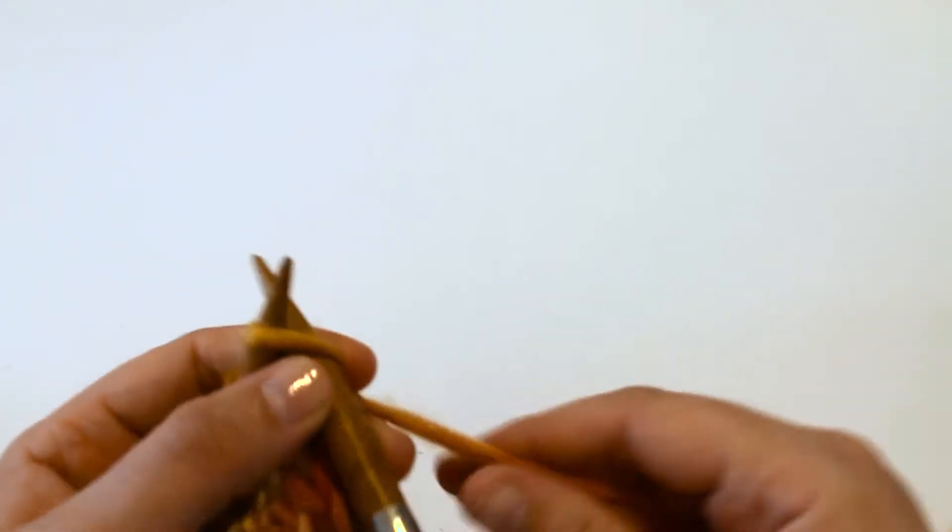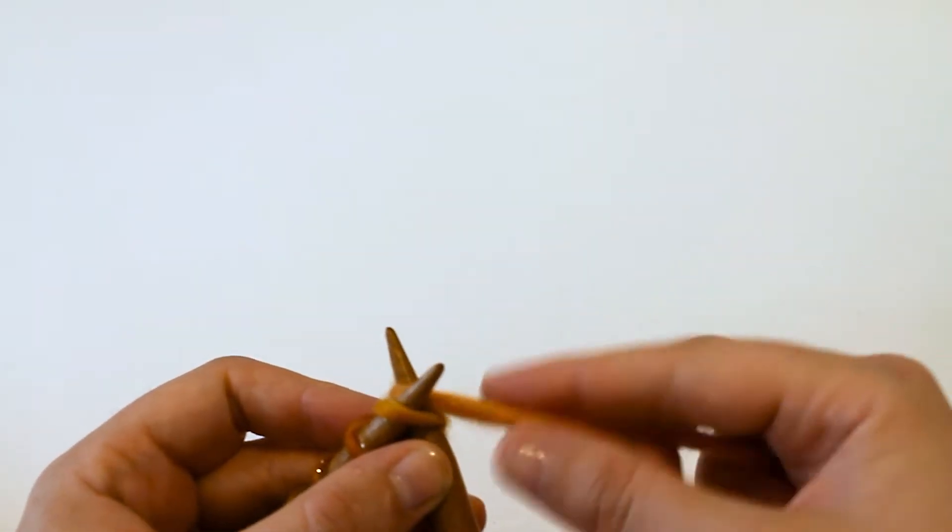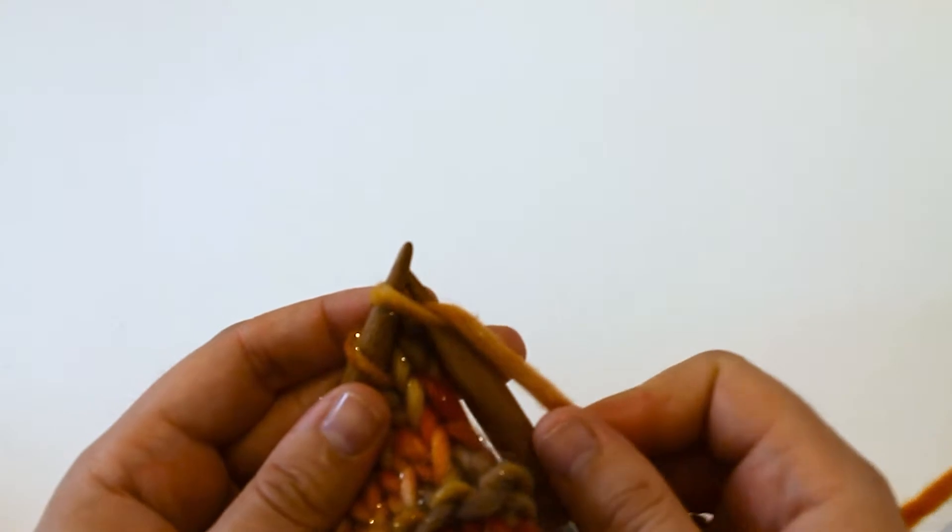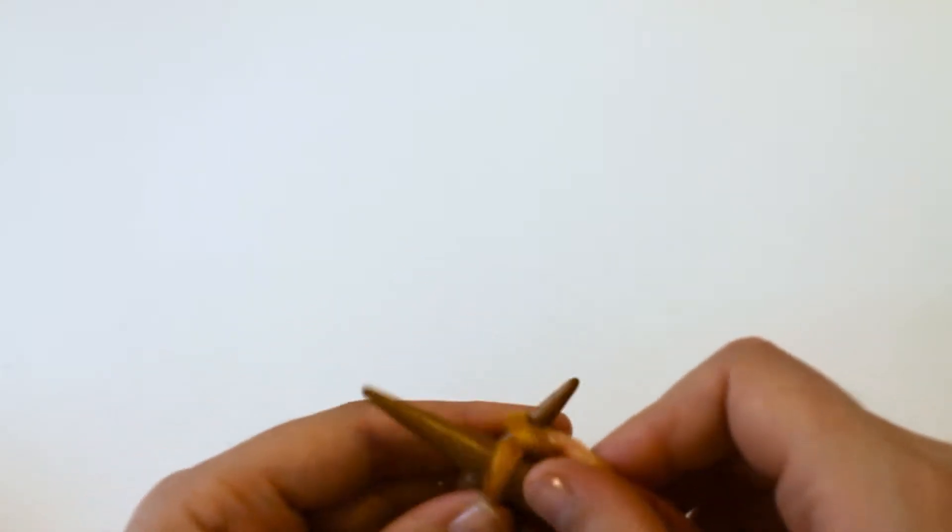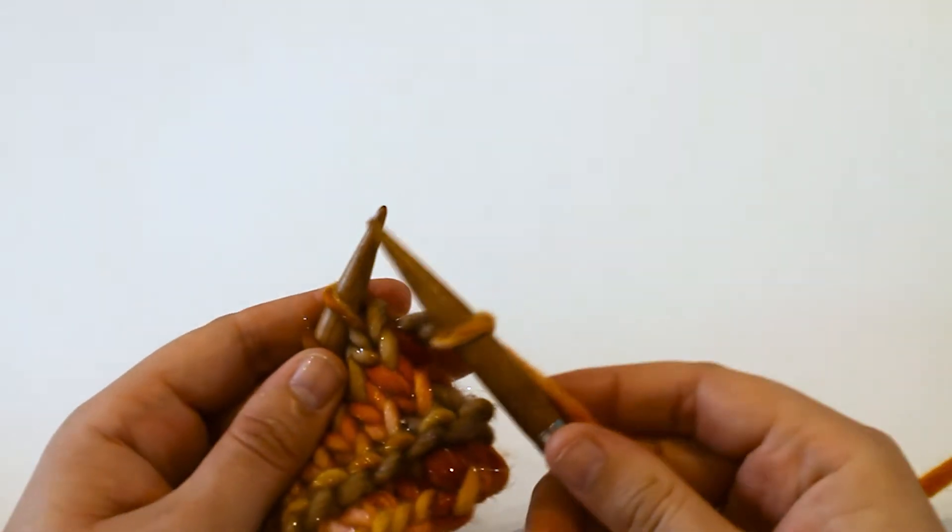Now as long as you can do a knit stitch, casting off shouldn't be too hard. So you want to make a knit stitch, pop through, wrap your yarn around your right hand needle, pull that yarn out as a loop on your right hand needle and move it across as a knit stitch.